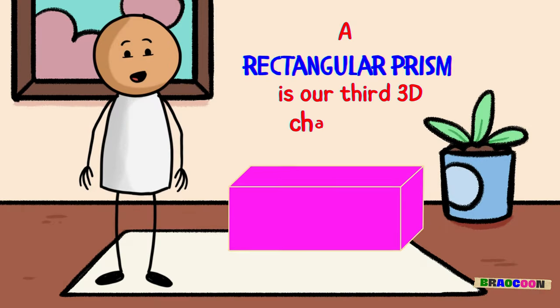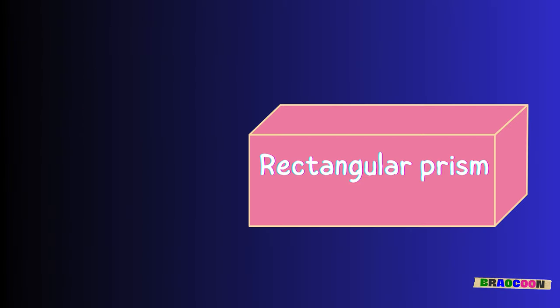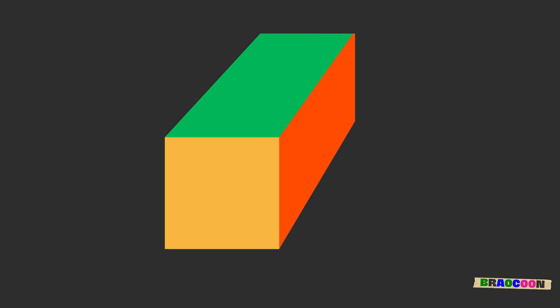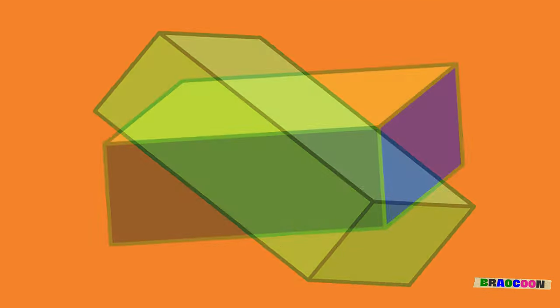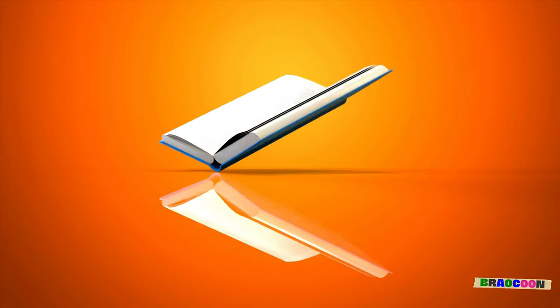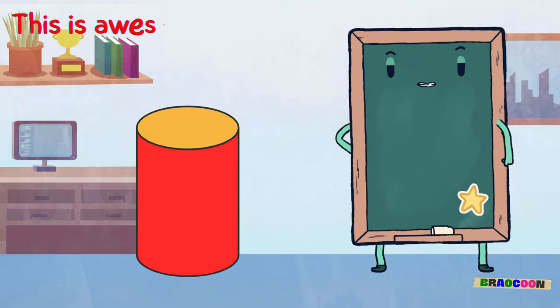A rectangular prism is our third 3D character. Rectangular prisms are the 3D version of rectangles. They are like a stretched out cube, with six faces where the opposite ones are identical rectangles. It's the shape of most boxes and books, having length, width, and height.